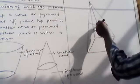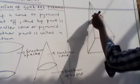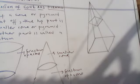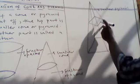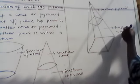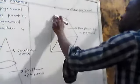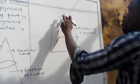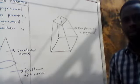The frustum of a cone: if I cut it off from here, what happens is the top part becomes the smaller pyramid. If this pyramid is cut off, what remains is the frustum of a pyramid. Try to draw this diagram — it is very important.